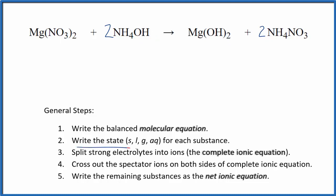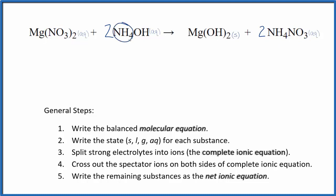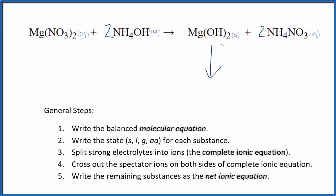Now we can write the state for each substance. If you know your solubility rules: nitrates are very soluble, so those compounds are soluble. Compounds with the ammonium ion are also very soluble in general. Hydroxides like magnesium hydroxide are only slightly soluble or insoluble, so we have a solid for magnesium hydroxide — it is a precipitate that falls to the bottom of the test tube.